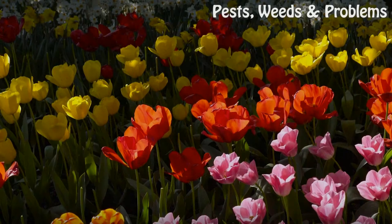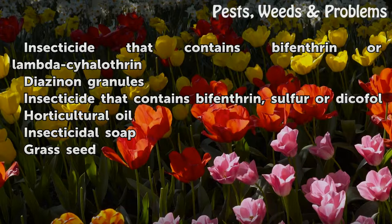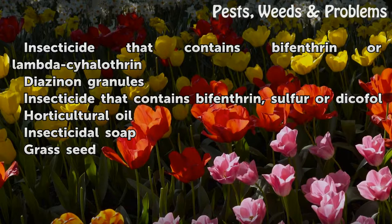Things You Will Need: insecticide that contains bifenthrin or lambda-cyhalothrin, Diazinon granules, insecticide that contains bifenthrin, sulfur, or dicofol, horticultural oil, insecticidal soap, and grass seed.